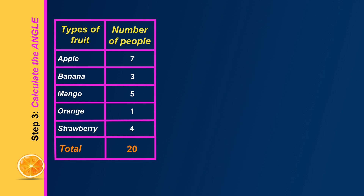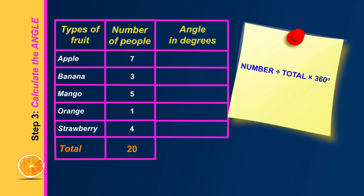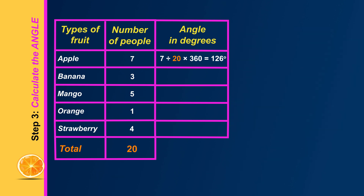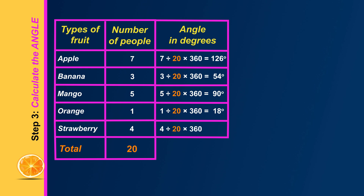In step three we calculate the angle that represents the number of people who chose each type of fruit. For apple, seven out of a total of 20 — seven twentieths — multiplied by 360 equals 126 degrees. There are three banana out of 20 multiplied by 360, which equals 54 degrees. For mango, it's five out of 20 multiplied by 360 to get 90 degrees. Only one out of the 20 people chose orange — multiply that by 360 to get an angle of 18 degrees. Lastly for strawberry, it's four divided by 20 multiplied by 360 to get an angle of 72 degrees.